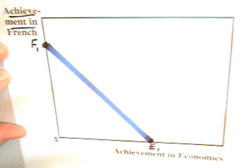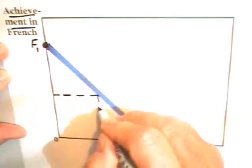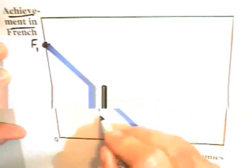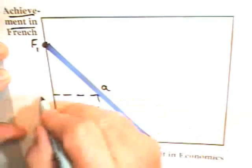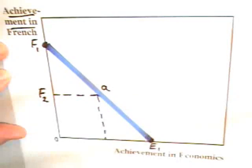Now, more than likely, a student going to school hoping to graduate is not going to choose either F1 or E1. The student might choose some intermediate point, for example, combination A, in which case the student learns F2 in French and E2 in economics.